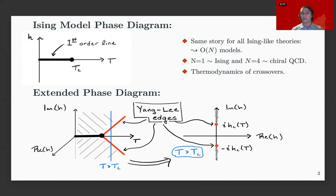So this story here that the Yang-Lee edge singularities lie at purely imaginary values of the external field is the same story for all Ising-like theories. So this is for all O(N) models.